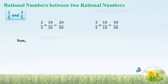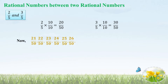Likewise, if you multiply 3 by 5 by 10 by 10, you get 30 by 50, which is also an equivalent fraction for 3 by 5. Now, how many numbers exist between 20 by 50 and 30 by 50? The denominators are common, so look at the numerators: 20 and 30. The numbers between 20 and 30 are 21, 22, 23 up to 29. Likewise, between 20 by 50 and 30 by 50, the numbers are 21 by 50, 22 by 50, 23 by 50, 24 by 50, 25 by 50, 26 by 50, 27 by 50, 28 by 50, and 29 by 50.